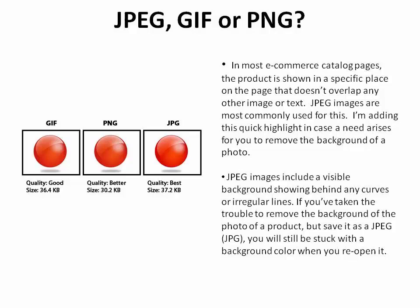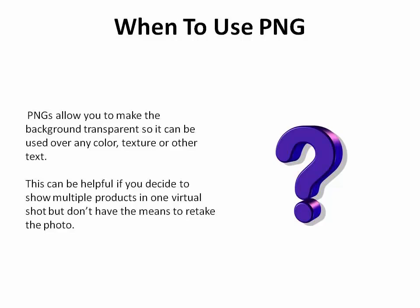JPEG, GIF, or PNG. In most e-commerce catalog pages, the product is shown in a specific place on the page that doesn't overlap with any other image or text. JPEG images are most commonly used for this. If you need to remove the background of a photo, be aware that JPEG images include a visible background behind any curves or irregular lines. If you save a background-removed image as a JPEG, you'll be stuck with the background color when you reopen it. PNGs allow you to make the background transparent so it can be used over any color, texture, or other text — helpful if you want to show multiple products in one virtual shot without retaking the photo.